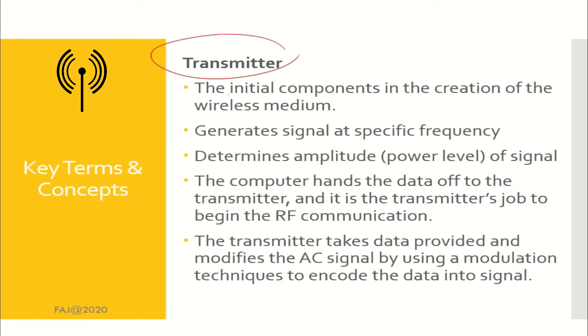Transmitter is the initial component in the creation of the wireless media. A transmitter will generate a signal at a specific frequency and also convert the data into a signal.